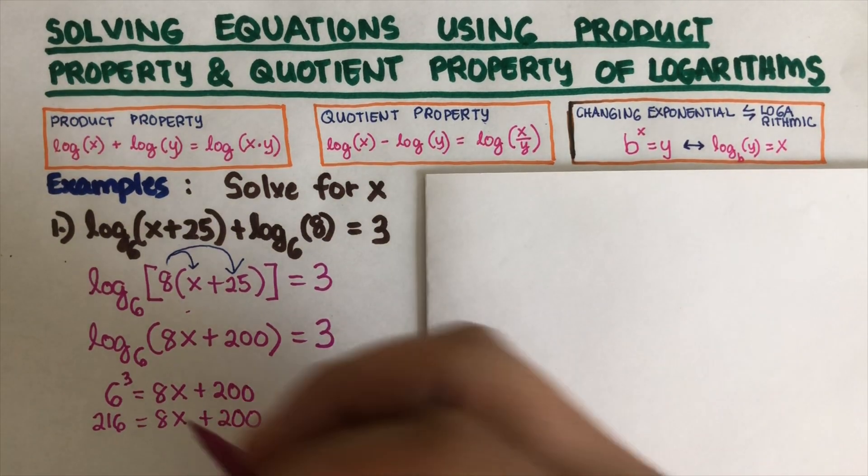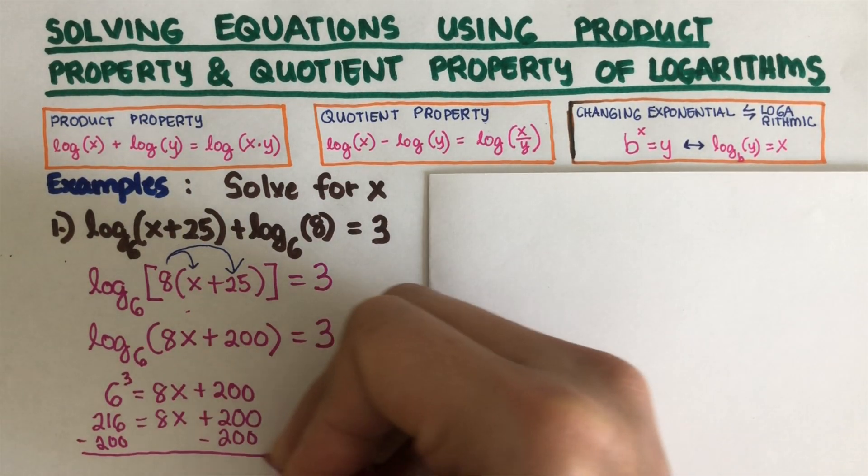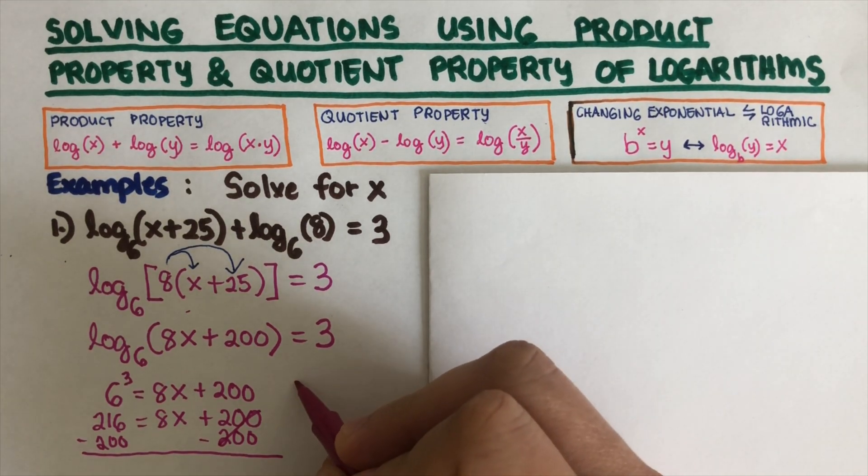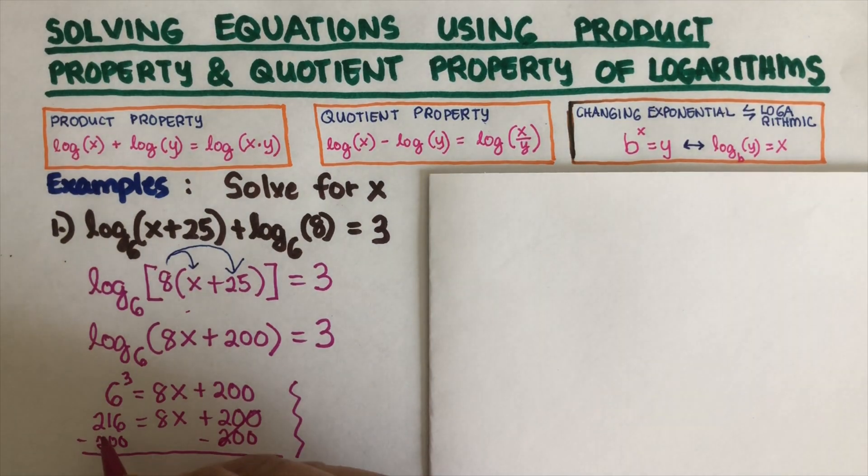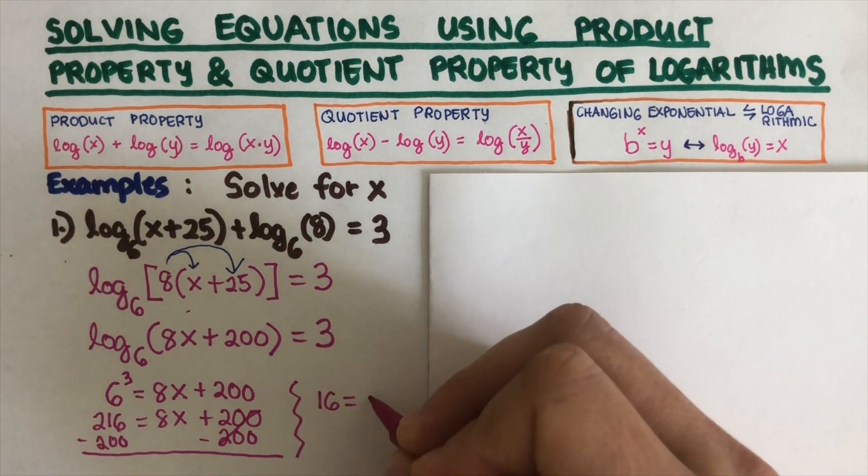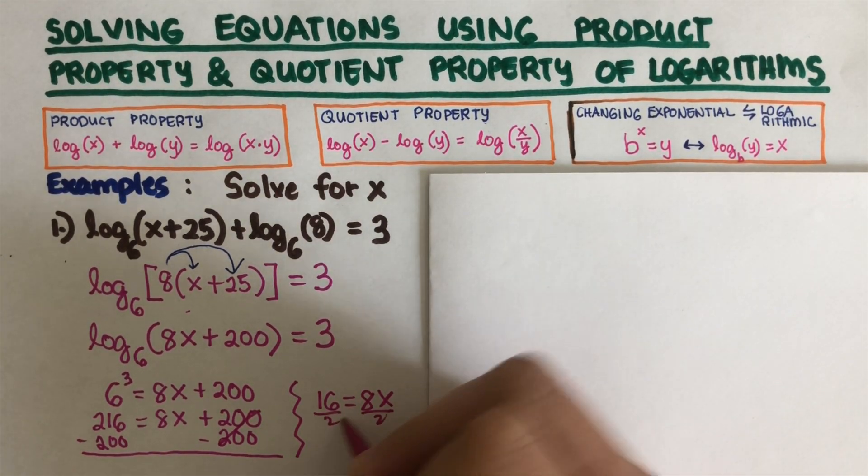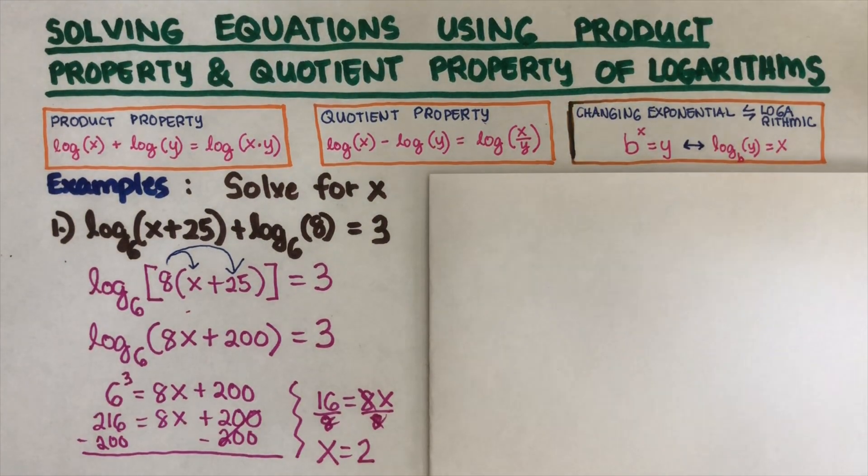We can subtract both sides by 200. I'm just going to show the work over here on the side, so that would be 216 minus 200 is 16 equals 8x. Then divide both sides by 8, and so our x is 2.